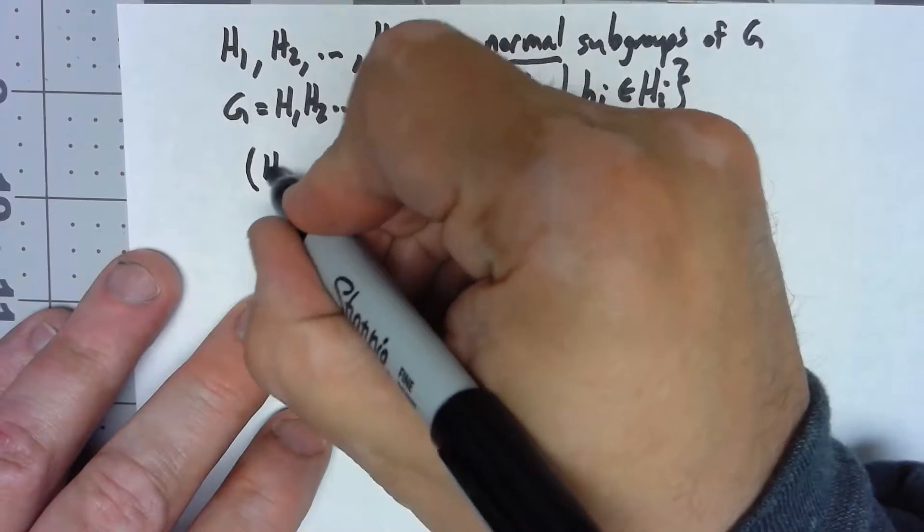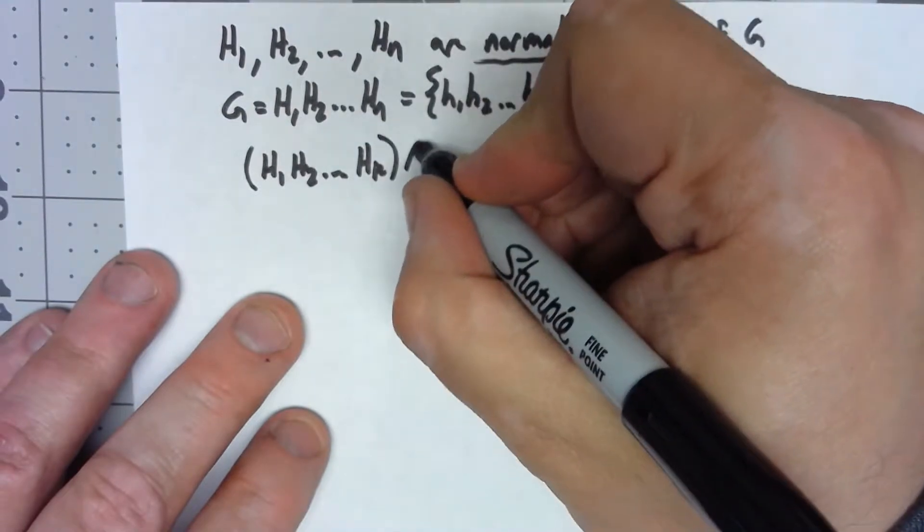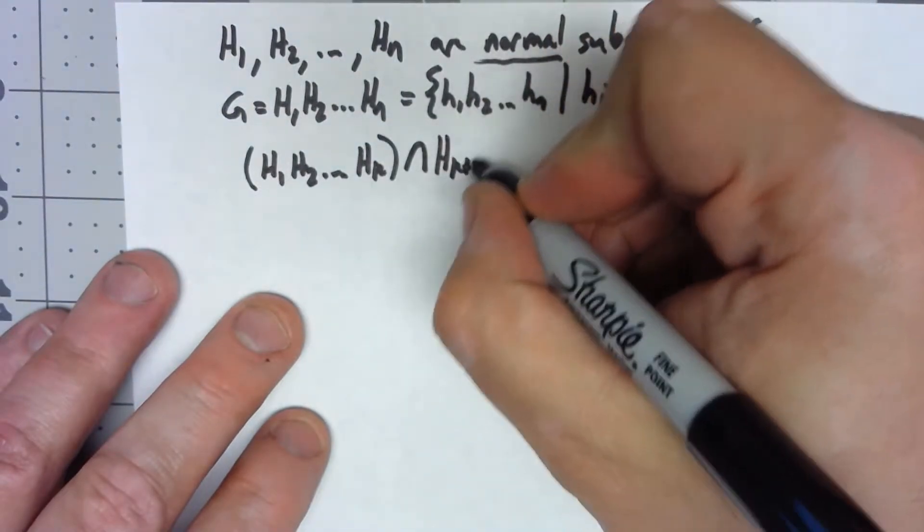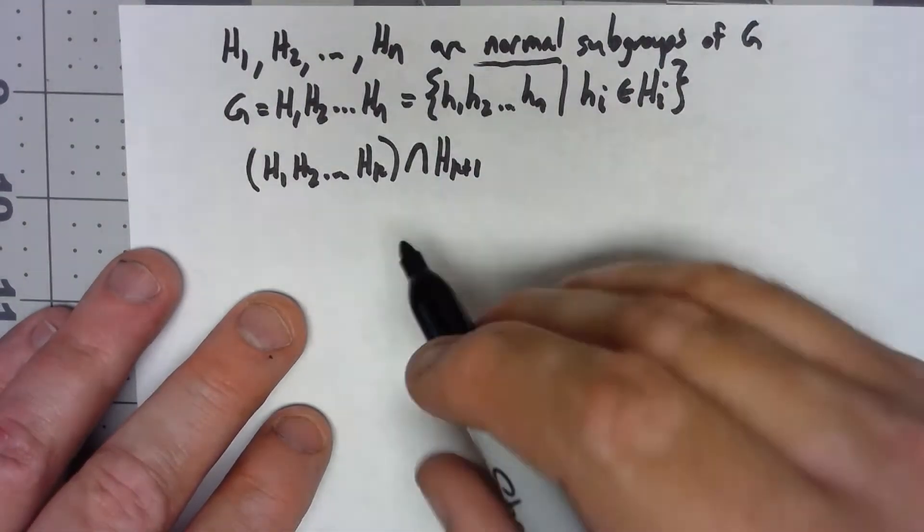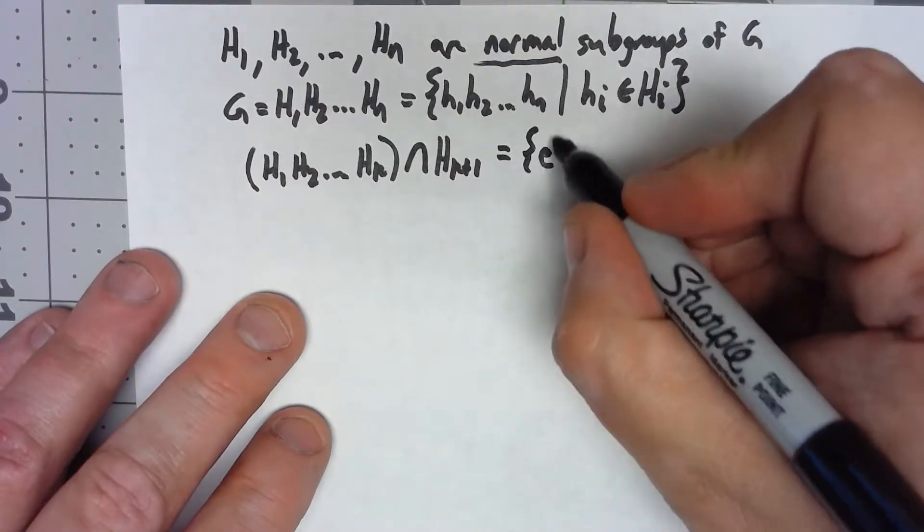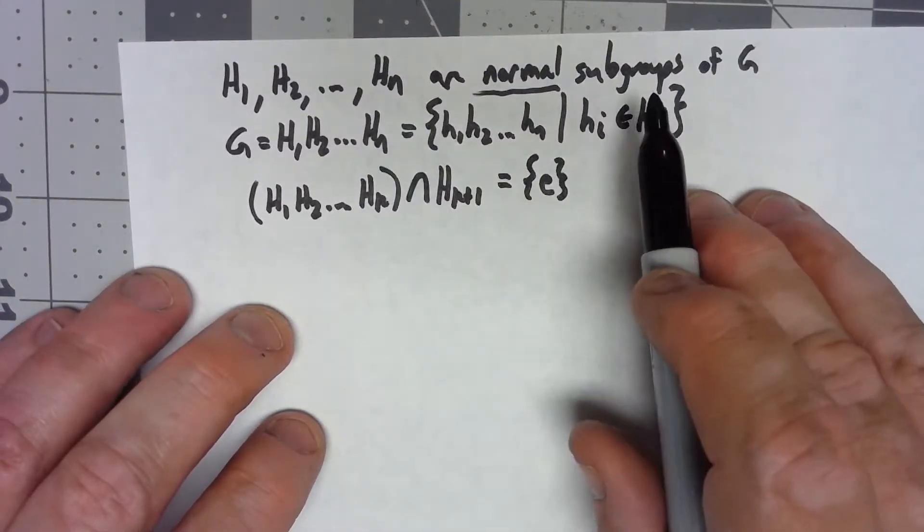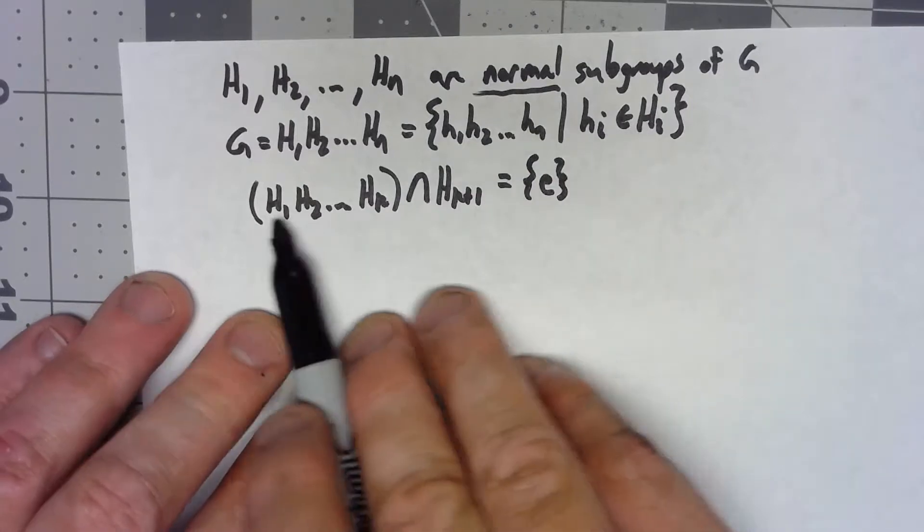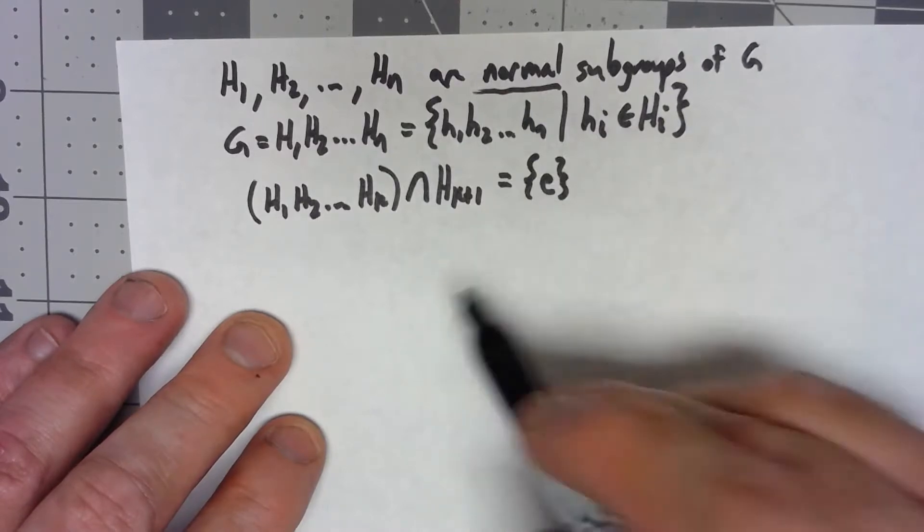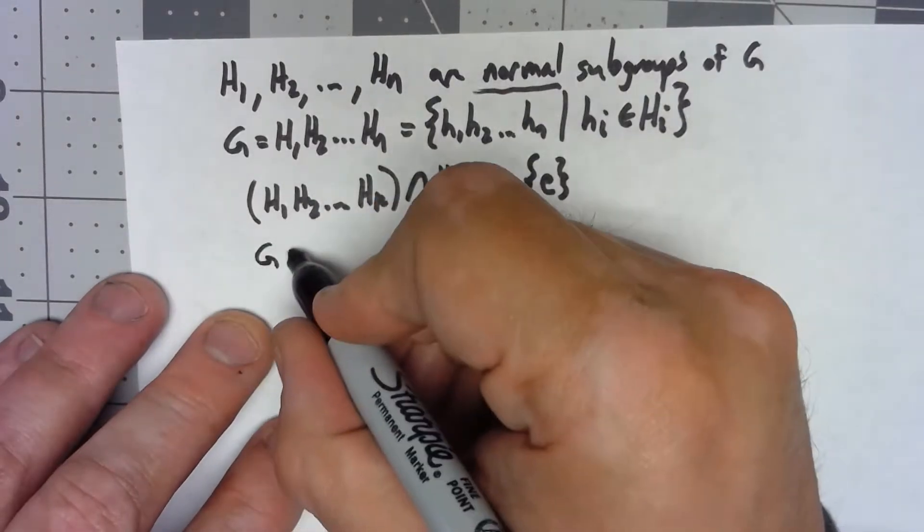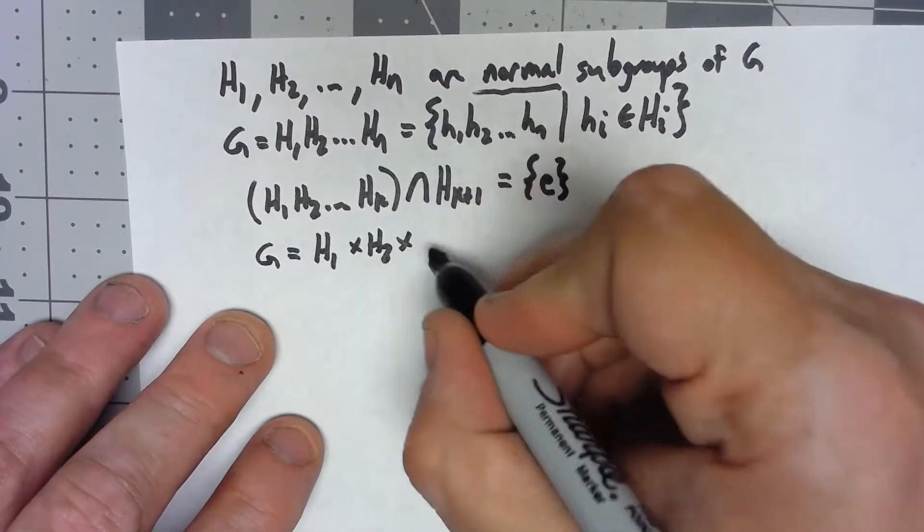So H1, H2, up to Hk intersect with Hk plus 1. When I multiply the first k of these subgroups together and intersect it with the next subgroup, that has to be just the identity. In that case, if we've got a bunch of normal subgroups that we can multiply together to get that, and we've got this weird bit where as they build they always just share the identity with the next set, then we can say that G is equal to the direct product of those normal subgroups.